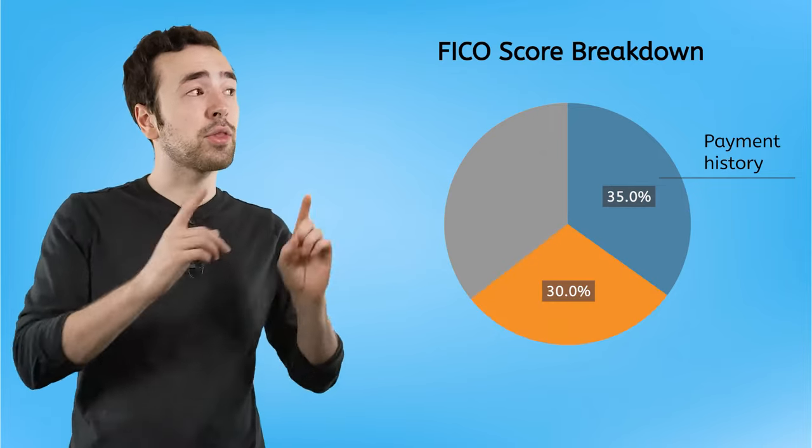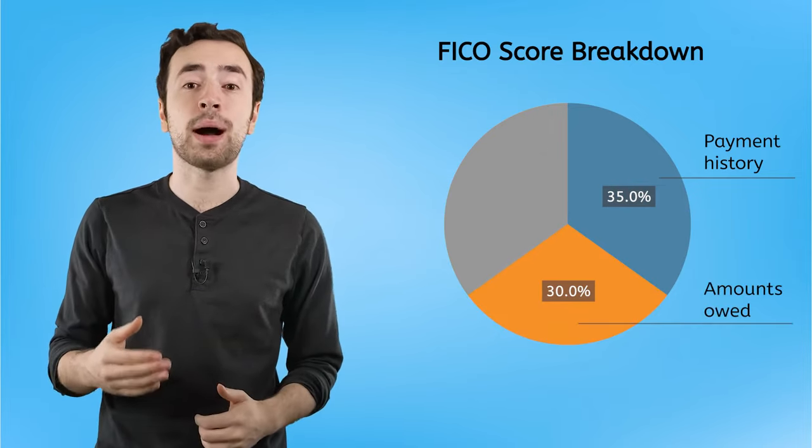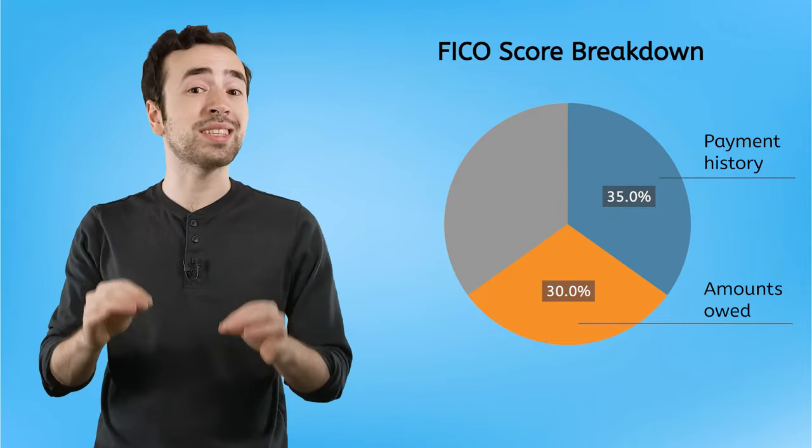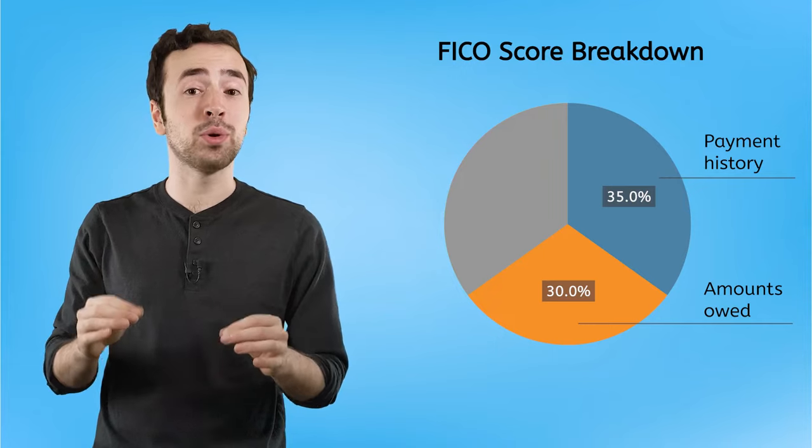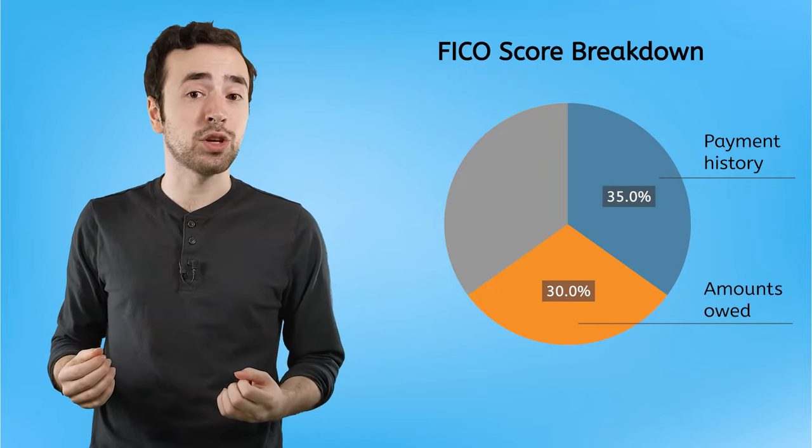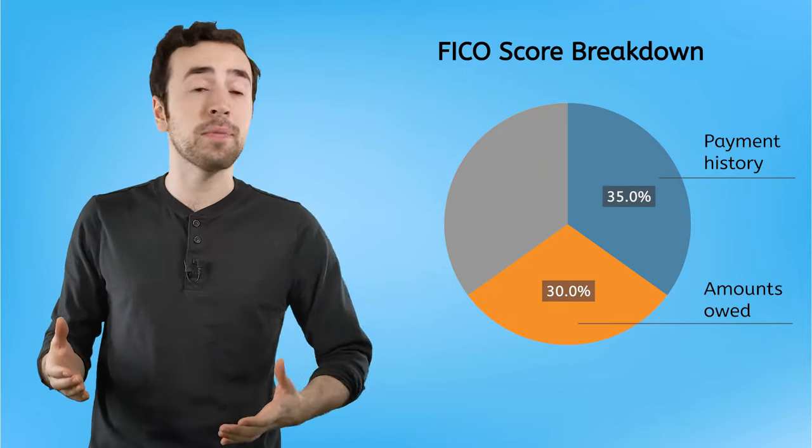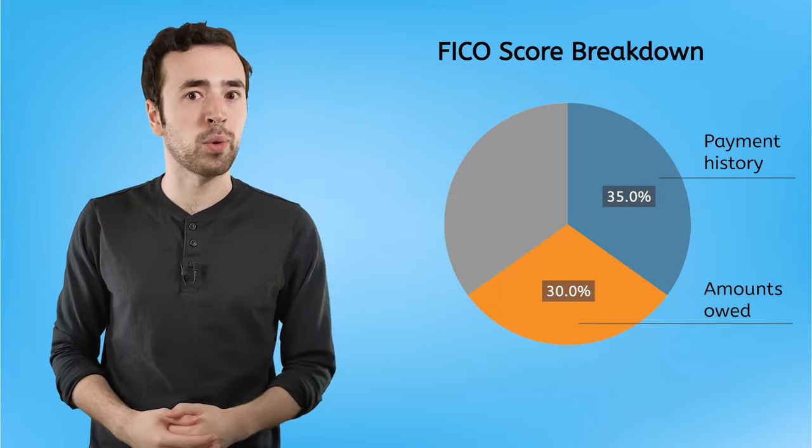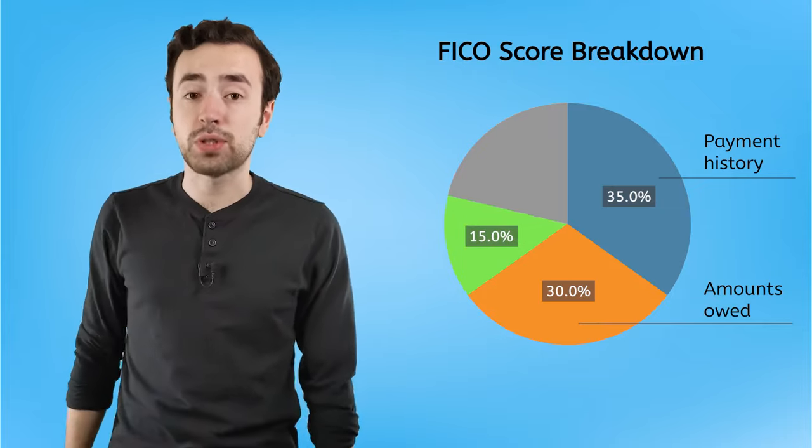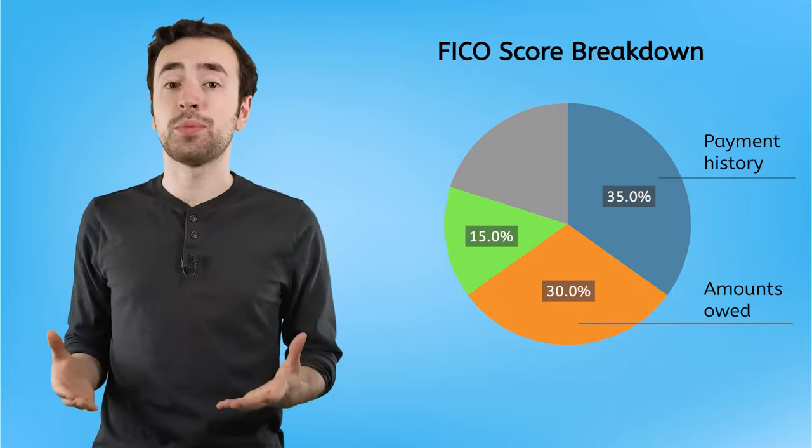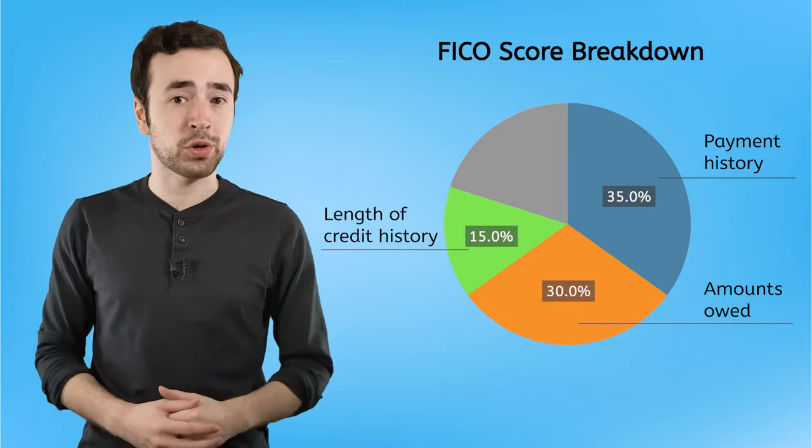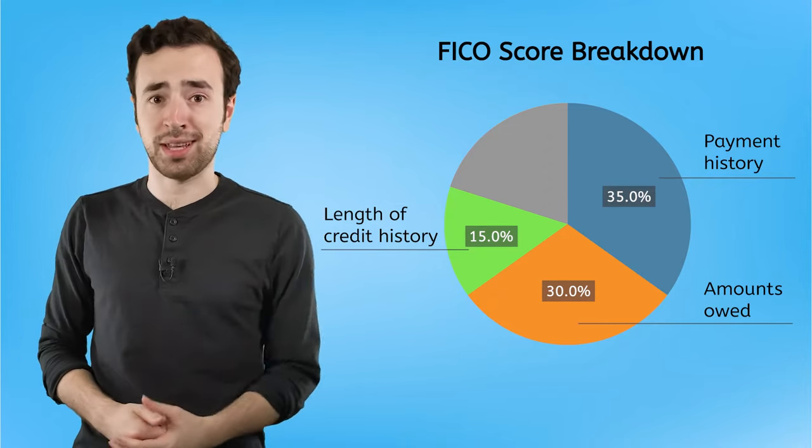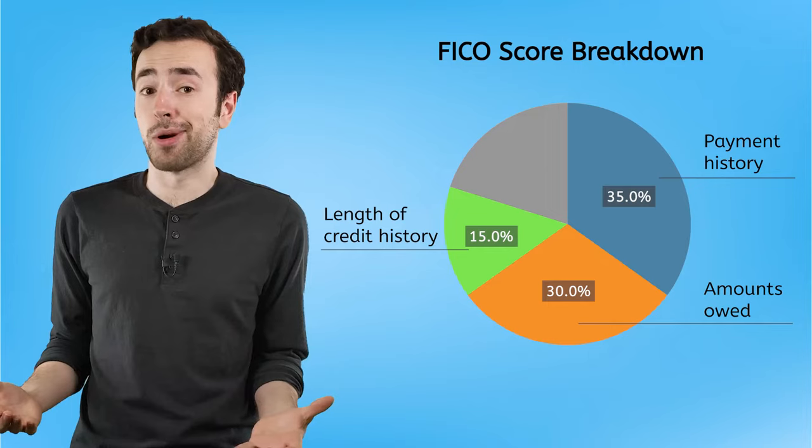About another 30% of the score is determined by the amount that you've owed. Lenders want to see signs of responsible credit ownership, so you should be able to show them that you're able to take on a reasonable amount of credit without going overboard. About 15% of your FICO score is determined by the length of your credit history. Lenders like to see that you have experience handling credit, so the longer you've been borrowing, the better.